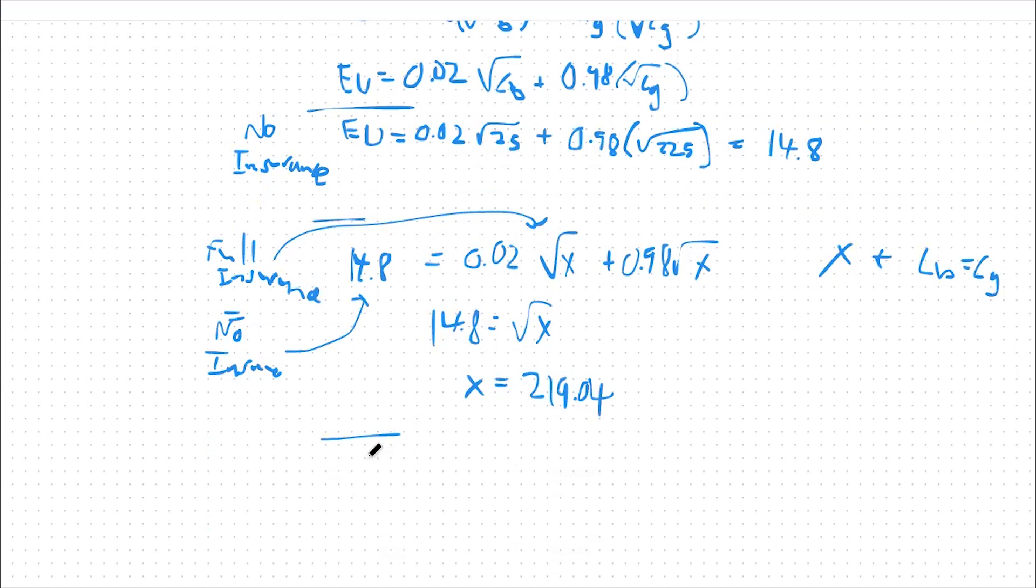From there, I'm going to subtract this 219.04 from my original consumption in general. And say that the maximum I should spend on insurance then is $5.96 million. So this should be our answer.